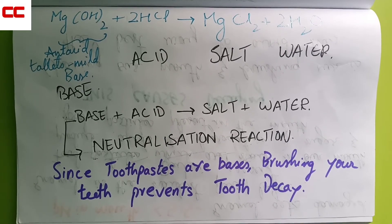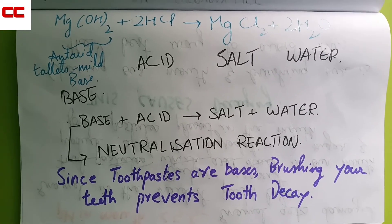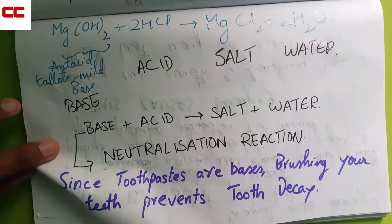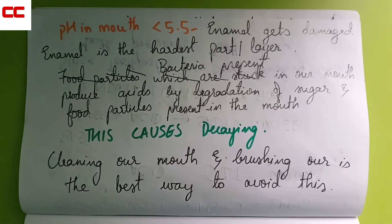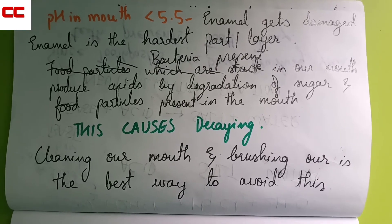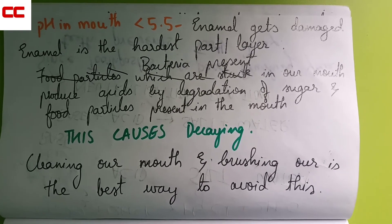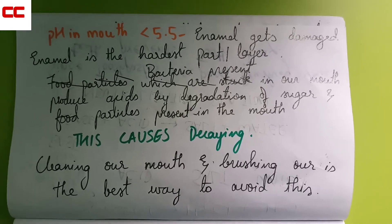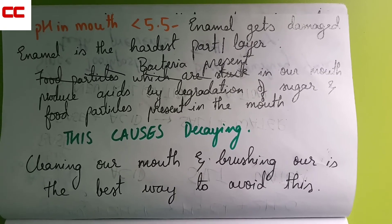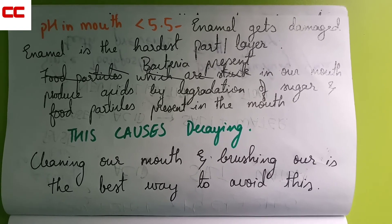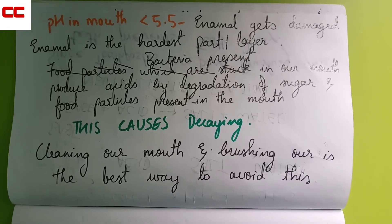We use toothpaste daily in the morning — toothpaste is a base. Since it is a base, when you brush your teeth it prevents tooth decay because it reacts with the acids present in your teeth. If the pH in the mouth is less than 5.5, it is starting to become very acidic — 7 is okay and 6 is okay, but below 5.5 the enamel, which is the hardest layer in our body, gets damaged. Bacteria present in our mouth produce acids by degradation of sugar.